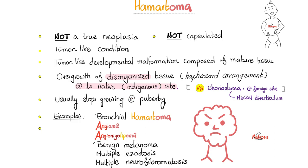Why does location matter? Because in the next video, I'll tell you about choristoma, which is not at the native site — it's at a foreign site. For example, when we have pancreatic tissue in the stomach — that's a choristoma, because the pancreatic tissue is supposed to be in the pancreas, not in the wall of the stomach. But if we have growth that is disorganized and haphazard at the native site, like an angioma in a vessel or bronchial hematoma in the bronchi, this is a hematoma, and it usually stops growing at puberty.